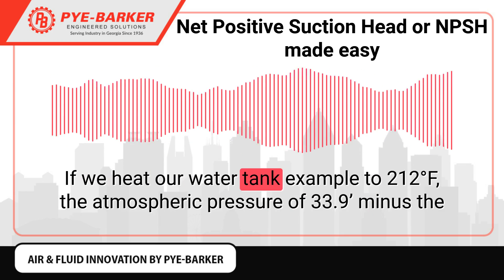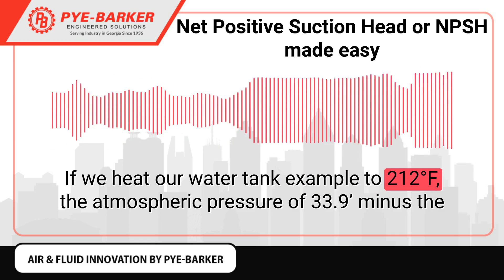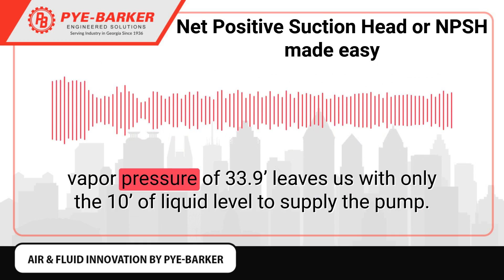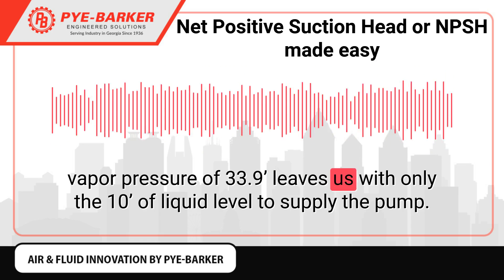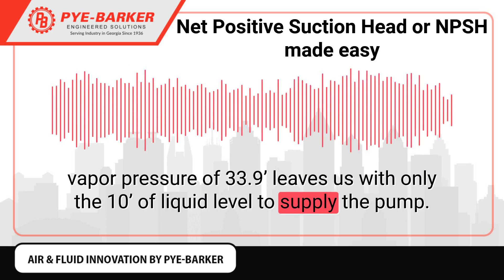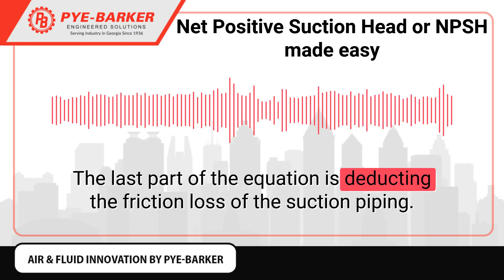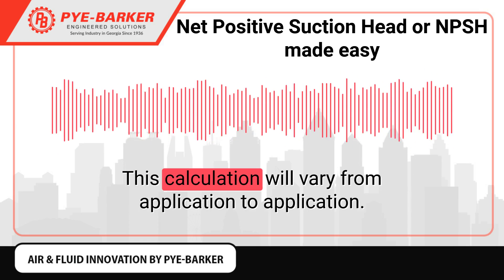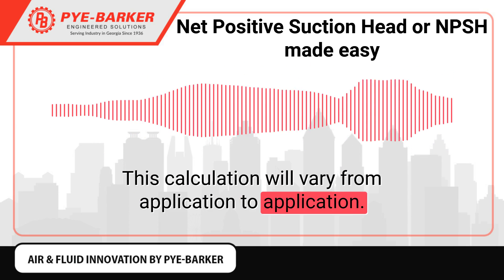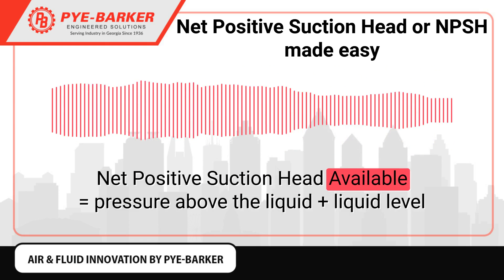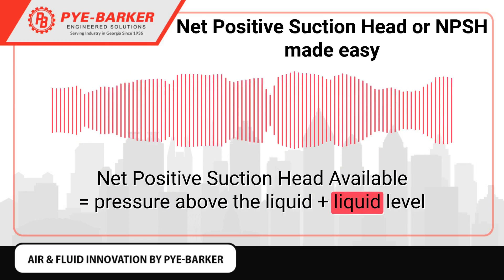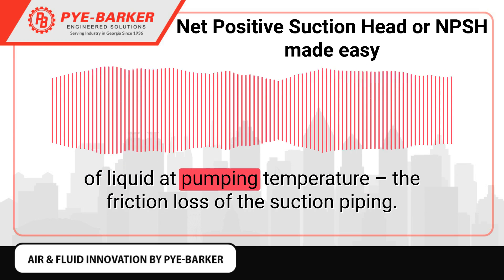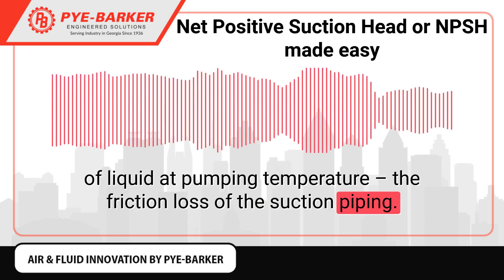If we heat our water tank example to 212°F, the atmospheric pressure of 33.9 minus the vapor pressure of 33.9 leaves us with only the 10 feet of liquid level to supply the pump. The last part of the equation is deducting the friction loss of the suction piping. This calculation will vary from application to application. Net Positive Suction Head Available equals pressure above the liquid, plus liquid level above the pump, minus the vapor pressure of the liquid at pumping temperature, minus the friction loss of the suction piping.